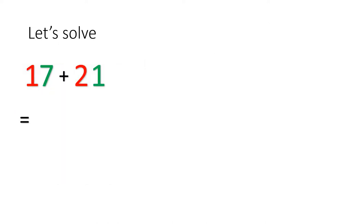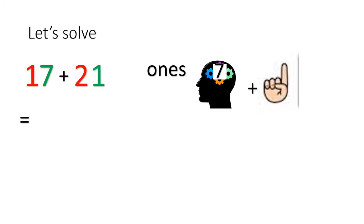Now let's solve 17 plus 21. First you need to solve the 1s. Put 7 in your brain and 1 on your finger and count what is after 7. The number after 7 is 8, so you write 8.